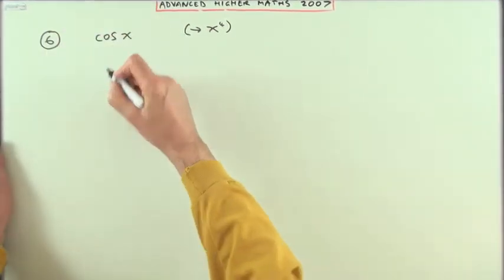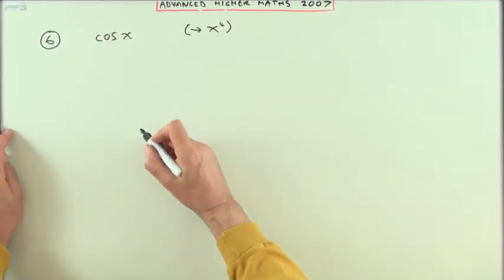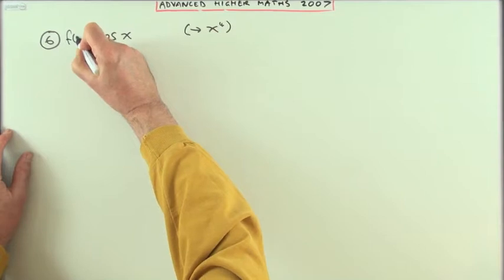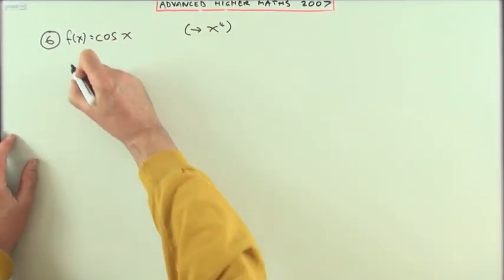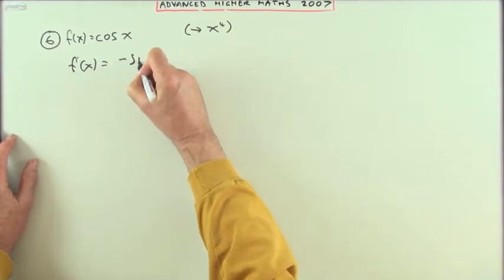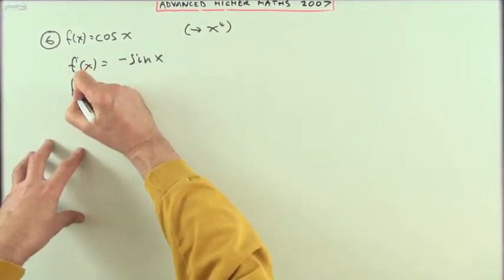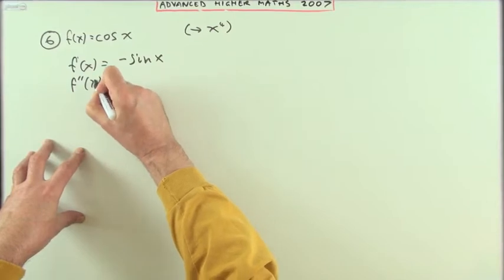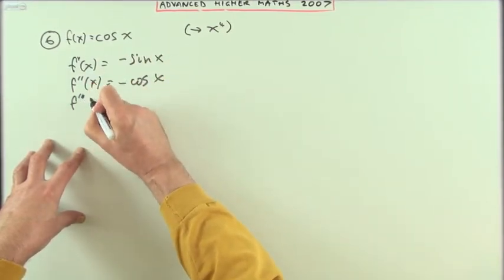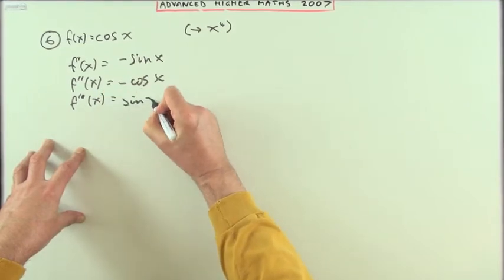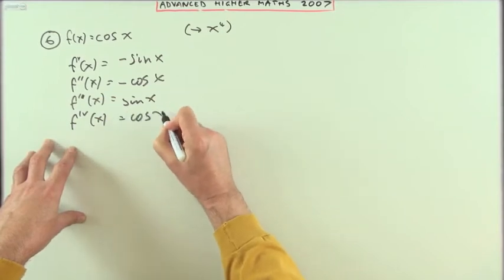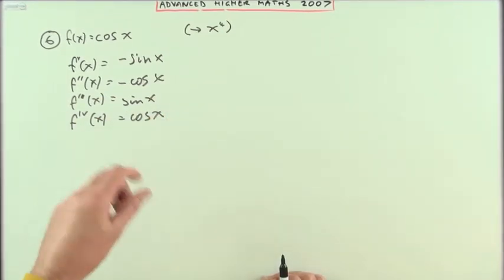However, it said find, so we'll just have to go through it all. We'll have to go through the various derivatives. Let's give this a name, call this f of x equals cos x. So f dash, the first derivative would be negative sin x, the second derivative would be negative cos x, the third derivative would be back to sin x, and the fourth derivative would be back to cos x, which is where you started.